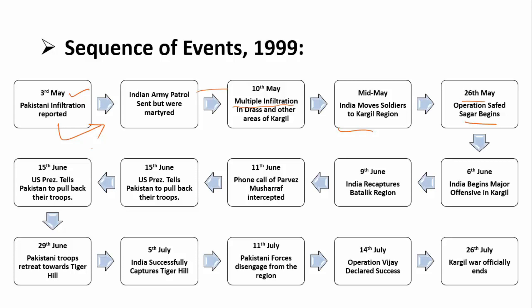By 9th June, India had also captured some hills and key tops. Then, on 11th June, a phone call by Pervez Musharraf — the chief of the Pakistani Army in Rawalpindi — was intercepted. This was key proof that the Pakistani army was directly involved in the operation.